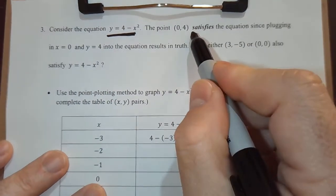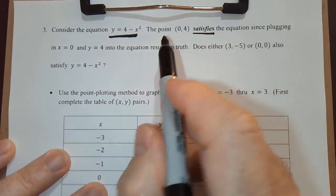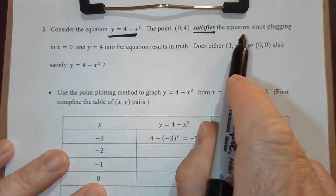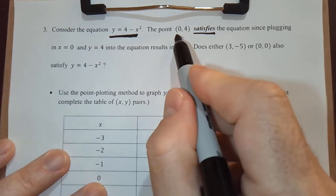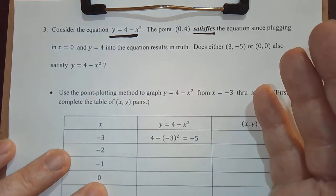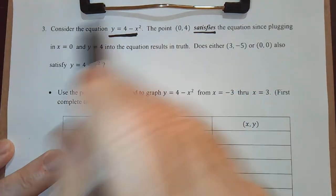Here's the vocabulary term we're going to learn. The point or ordered pair, 0 comma 4, satisfies this equation, because when we plug in x equals 0 and y equals 4, we obtain the truth. It is actually an equation.